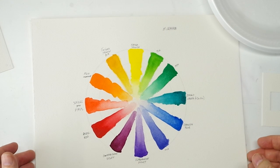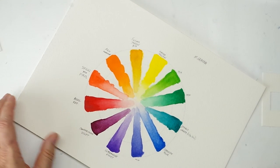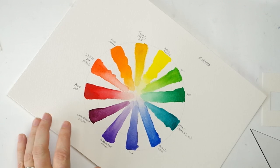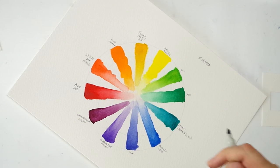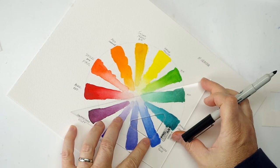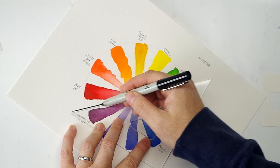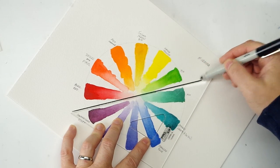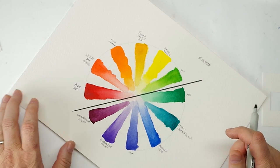All right, so that brings me to another question that I had from you viewers. What constitutes warm and cool colors? So I'm going to turn the color wheel this way about 45 degrees, and I'm going to draw a line right about here, right through the middle of my color wheel.